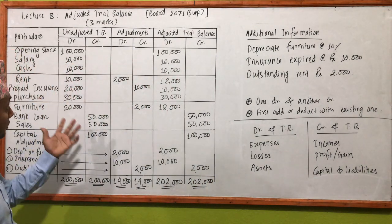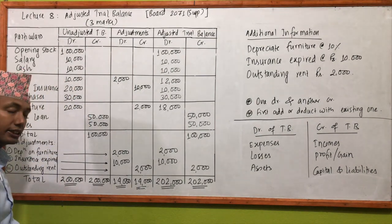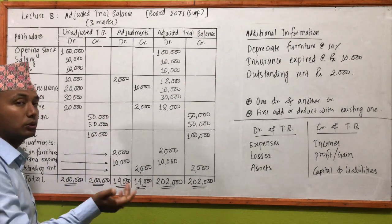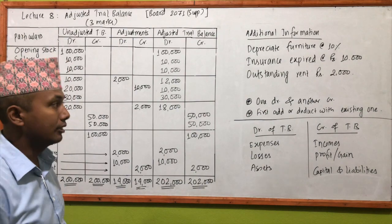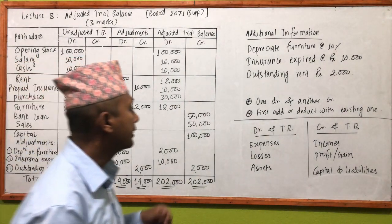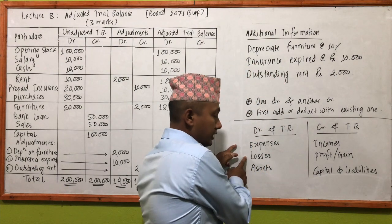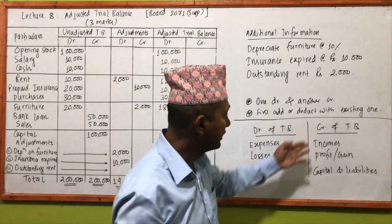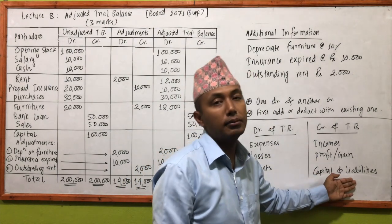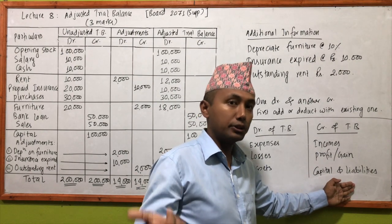Now here is the question. If you have a debit or credit question, you can see the trial balance. How do you determine debit or credit? There are expenses, losses, and assets — these go to debit. Income, profit, gain, capital, and liability go to credit. That's what we read in the journal and the rules of debit and credit.